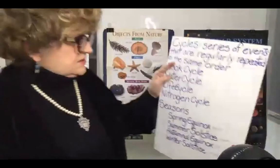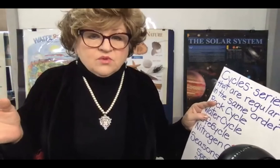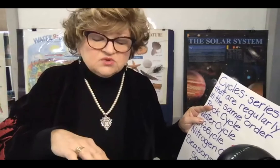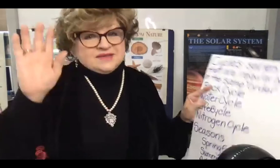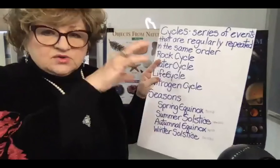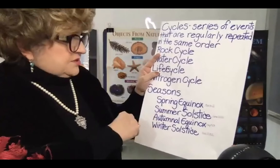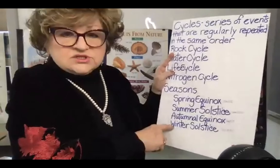The nitrogen cycle: we need nitrogen to form DNA and proteins, but our bodies can't utilize it from the atmosphere directly even though more than three-quarters of it is nitrogen. It has to be fixed in the soil by bacteria or by lightning, plants take it up, and we eat the plants. In the seasons, we have two equinoxes — spring in March and autumn in September — the summer solstice (longest day) and the winter solstice (shortest day).